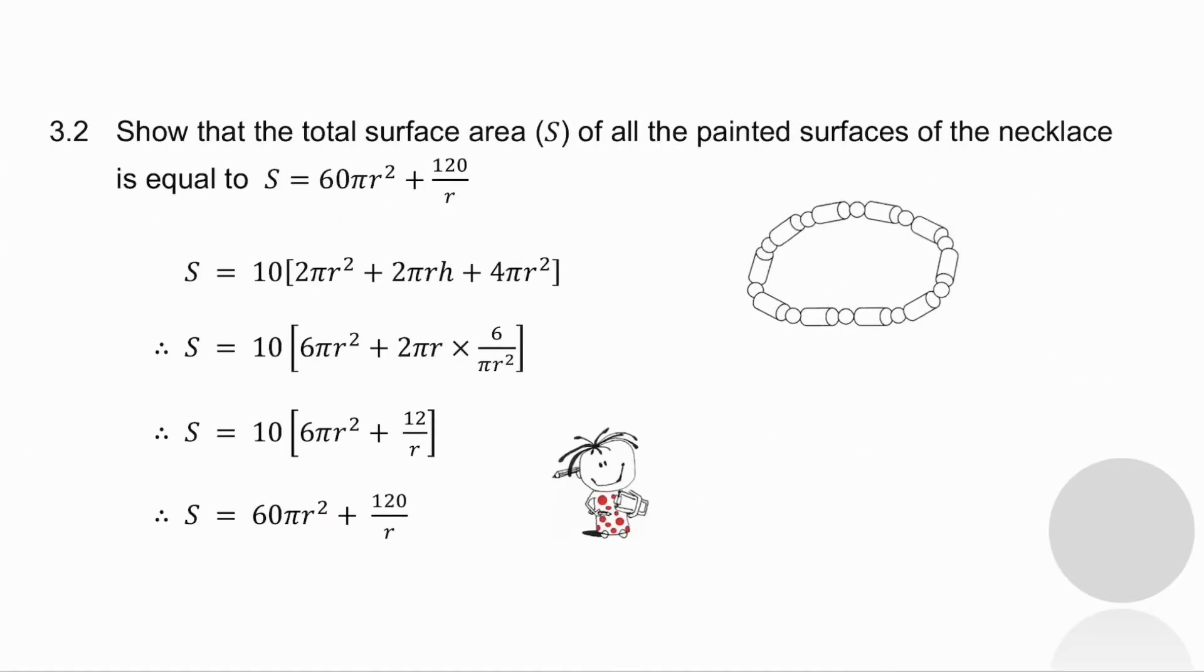3.2 asks me to get the total surface area. What I've got here is the following. The surface area of a cylinder is 2 pi r squared plus 2 pi r h. The surface area of a sphere is 4 pi r squared, and there are 10 of each of them. Remember, I've got that h was equal to 6 over pi r squared in the previous question, and all that remains for me to do is simplify and multiply out and get it into the form that they asked me for.